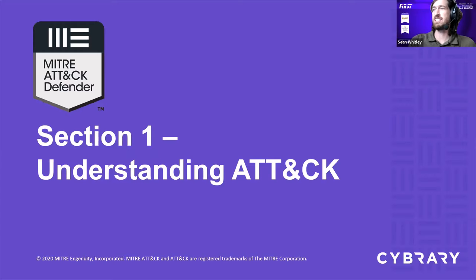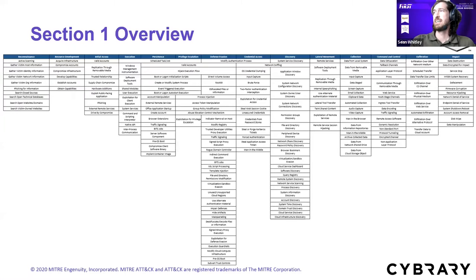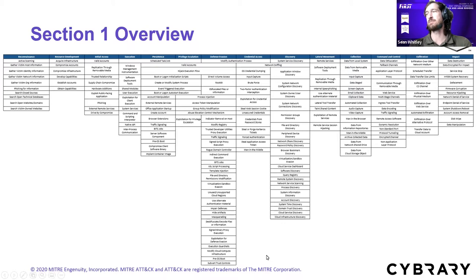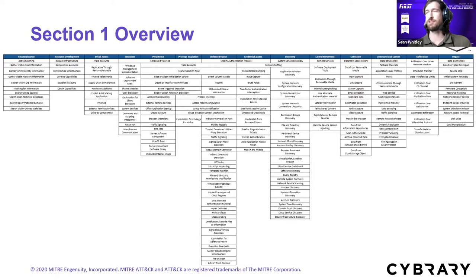Section one: understanding ATT&CK. This is what ATT&CK looks like. When you see people talk about ATT&CK, this is usually the view you see — the classic tabular format where we have tactics across the top and techniques running down below. We'll go into more detail, but when talking about ATT&CK, this tabular view is the summary we're often referring to.